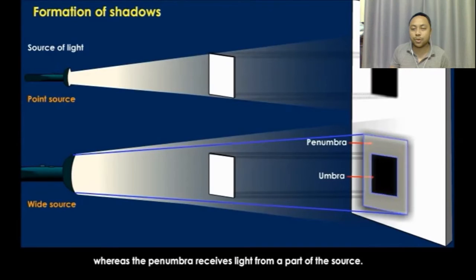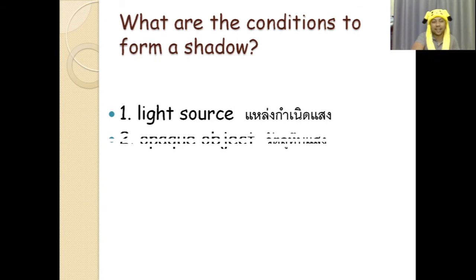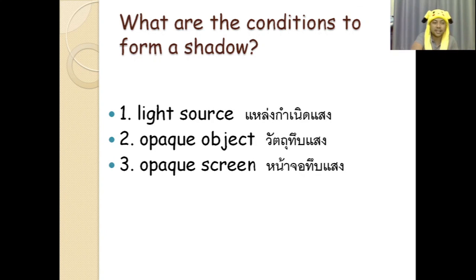What are the conditions to form a shadow? Do you still remember? Number one: in order to form a shadow, you must have a light source. The second one is an opaque object, and the third one is an opaque screen.